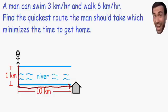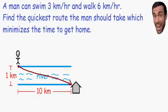Actually, the fact of the matter is that this is not the quickest option. Let's take a look at another option. He can decide to take the shortest route possible, which means he would swim directly in a straight line straight to his house. This is a really bad option because he swims so much slower than he walks, so this is definitely not the quickest way the man can get home.